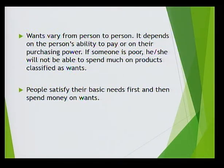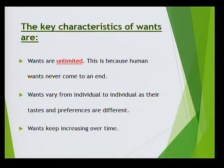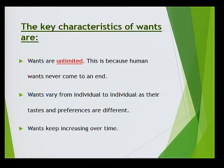They must have food, shelter and clothing first. Then they are going to spend on their wants. The key characteristics of wants are: they are unlimited — human wants never come to an end. The wants vary from individual to individual as their tastes and preferences are different. Wants keep increasing over time.